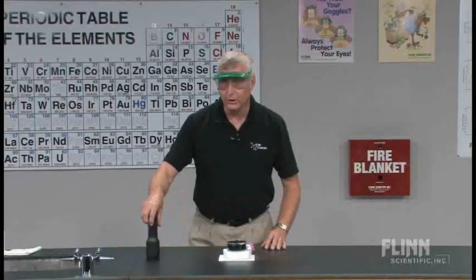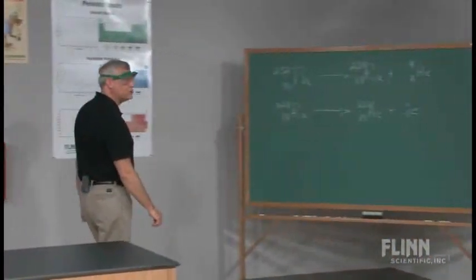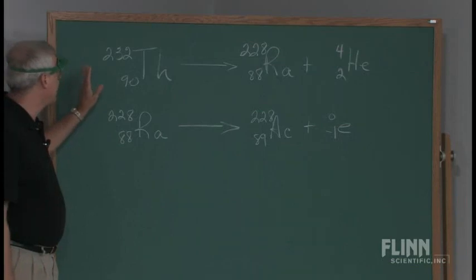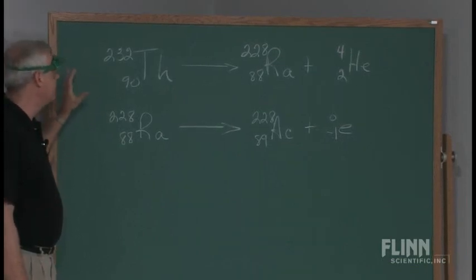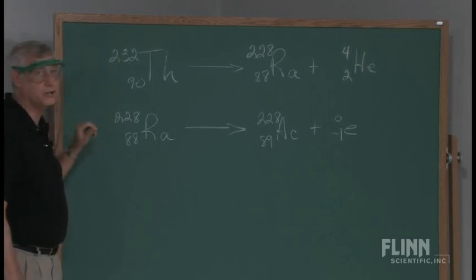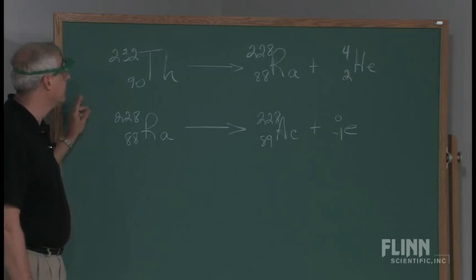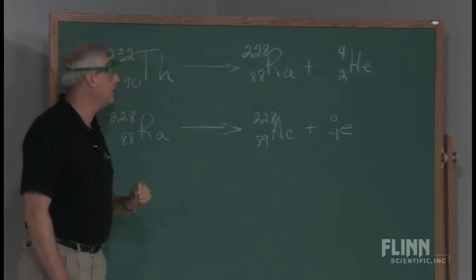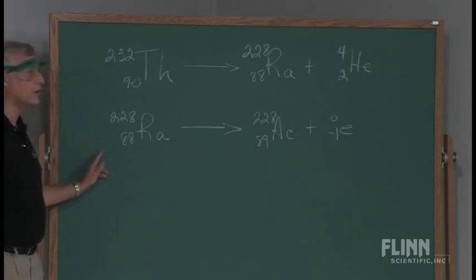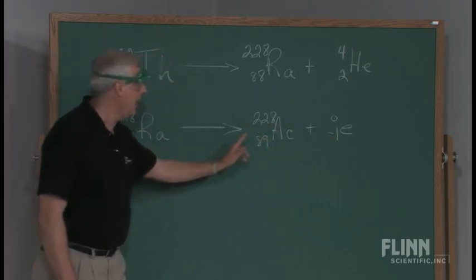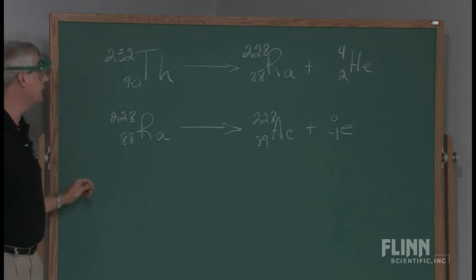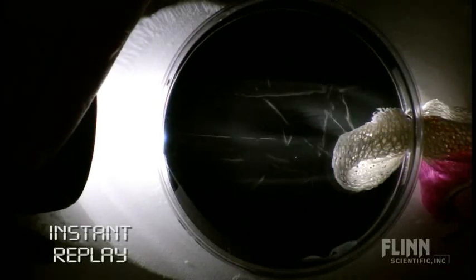Let's go to the board and take a look at what's taking place. We need a radiation source, and the one we're using for the cloud chamber is a lantern mantle like you might use for camping. Some lantern mantles — not all of them — will have thorium-232, which is the most common radioactive thorium isotope present. It undergoes an alpha decay process, and when it gives off an alpha particle, it produces radium-228. That radium-228, the daughter product, then undergoes beta decay, giving off a beta particle, and forms actinium-228. So we have both alpha and beta particles likely present in there, and there's likely some background radiation as well.